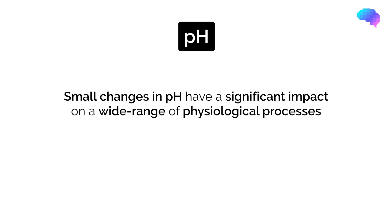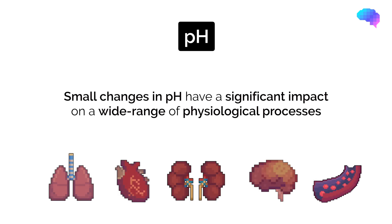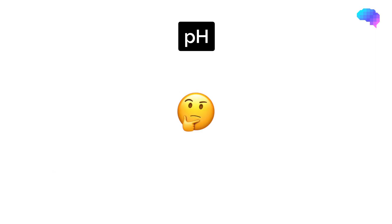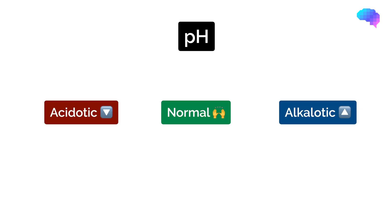Seemingly small abnormalities in pH have very significant and wide-ranging effects on the physiology of the human body. Therefore, paying close attention to pH abnormalities is essential. We need to ask ourselves: is the pH normal, acidotic, or alkalotic? Acidotic is a pH less than 7.35, normal is a pH between 7.35 and 7.45, and alkalotic is a pH greater than 7.45.